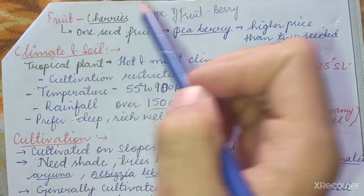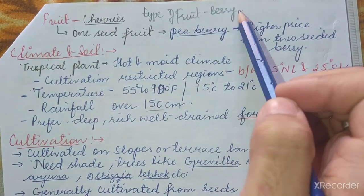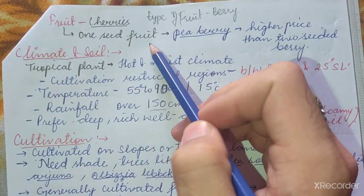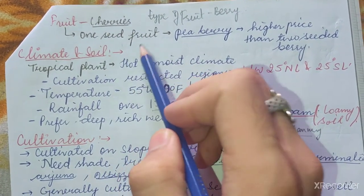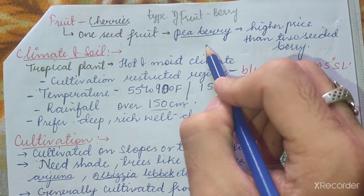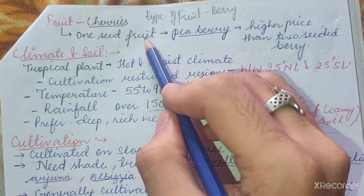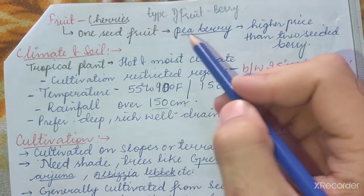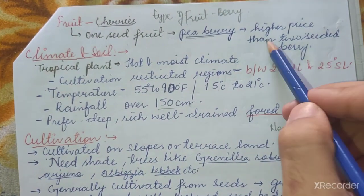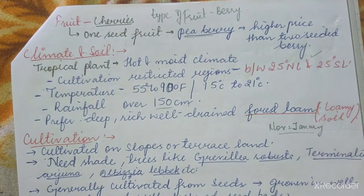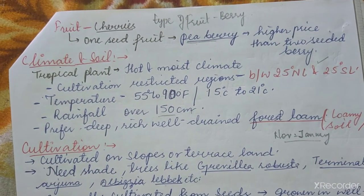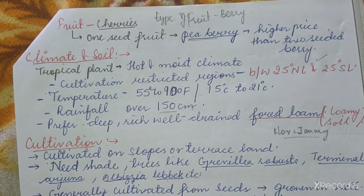The fruit is a type of berry. It may be one-seeded or two-seeded. If the fruit is one-seeded, it is called a pea berry, and the pea berry has a higher price than two-seeded berries.